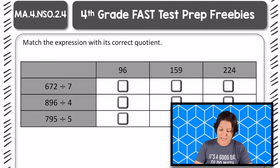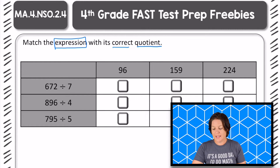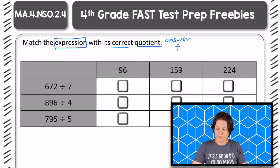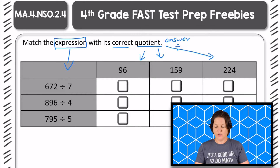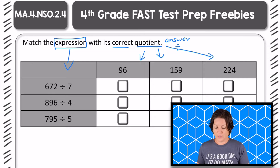So it says to match the expression with its correct quotient. The quotient is the answer when we're using division. Those quotients can be found down here and we're matching them with the expression. You can see that we don't have an equal sign, we just have an expression. For instance, 672 divided by seven — those are all expressions.